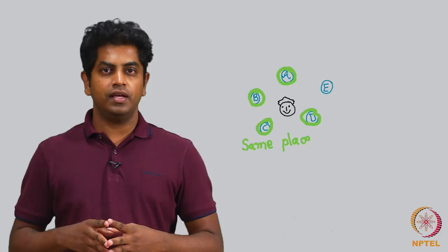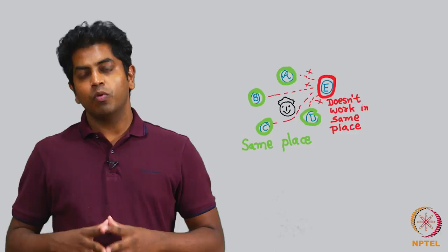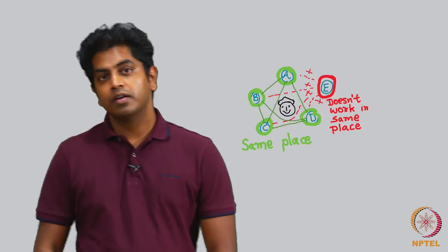Assume I have 5 friends A, B, C, D and E. A, B, C, D work in the same place where I work. While E is someone who does not work in the same place as me and E does not know A, B, C, D while A, B, C, D they all know each other. Assume such a scenario.